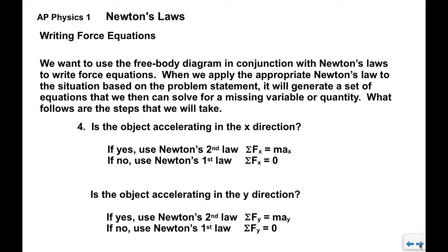Step four, we then have to decide independently in the x and y direction if the object is accelerating. If the object is accelerating in the x direction, we use Newton's second law: sigma fx equals max. Sigma fx means the sum of the forces in the x direction. If the object is not accelerating in the x direction, then we use Newton's first law and the sum of the forces equals zero. We then make the same determination in the y direction. If it's accelerating, we use sigma fy equals may. If it's not accelerating, we use Newton's first law.